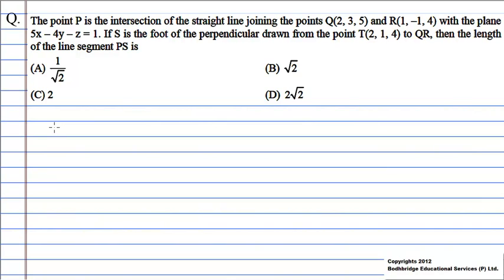In this question, first we will find out the equation of the line QR. Then we will try to find out the point P, which is the intersection of the straight line joining the points QR and the plane. Then, to find out the length of the line segment PS with the given information, we will find out the point S.